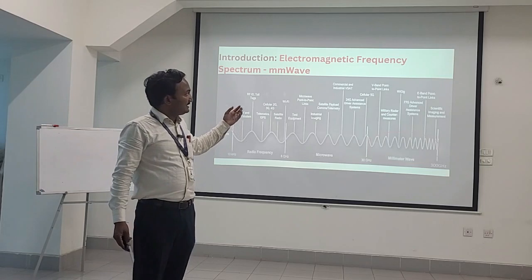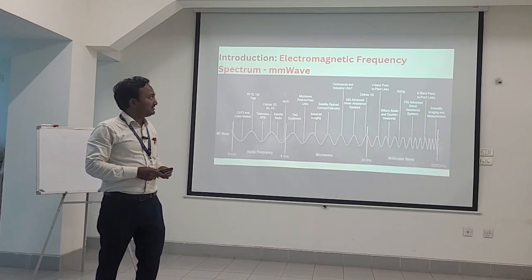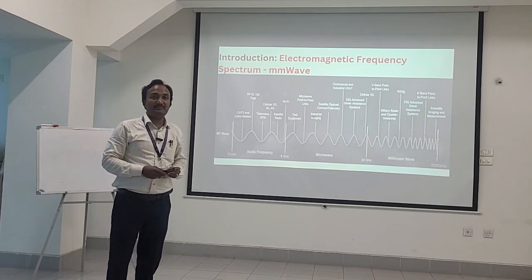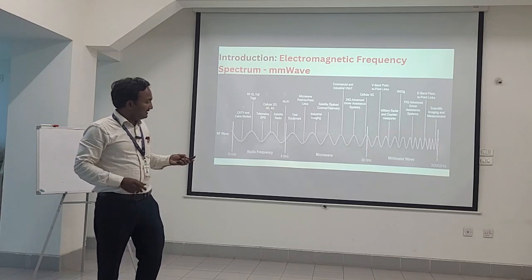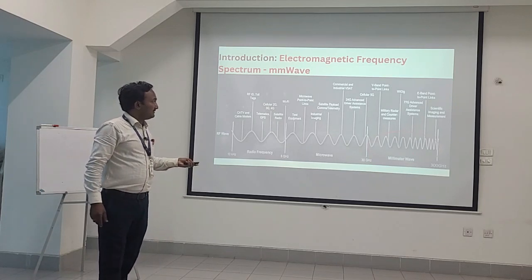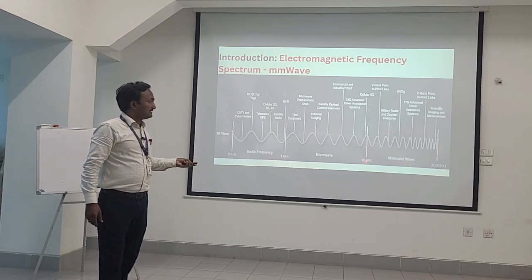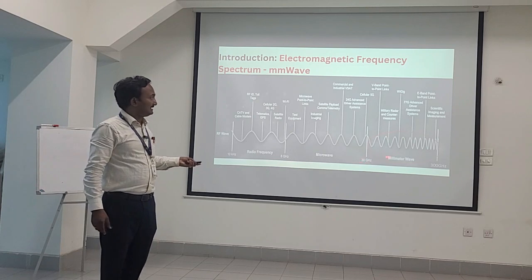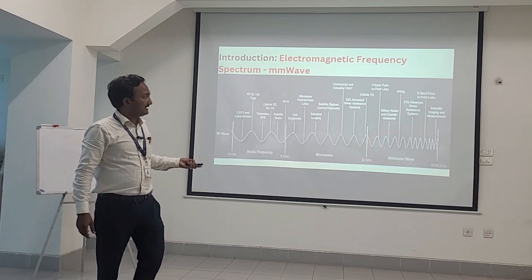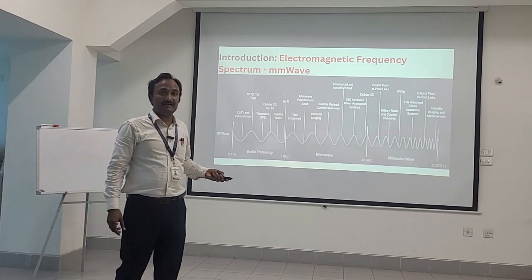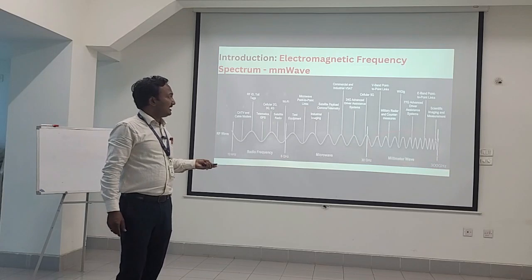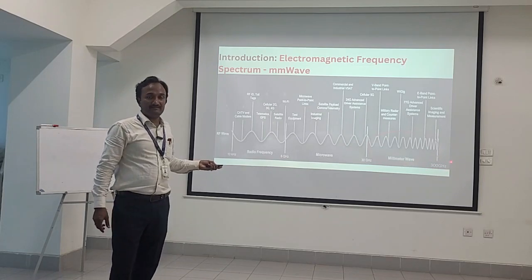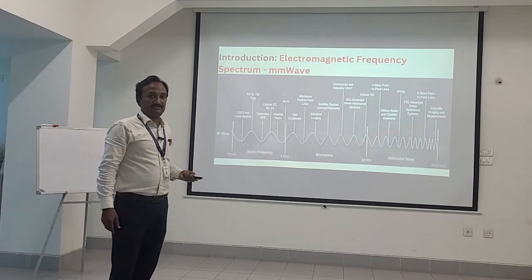It is also used for scientific imaging and measurement applications. As you can see, the millimeter wave starts from 30 gigahertz and ends at 300 gigahertz. It has a larger bandwidth, which is very useful for these applications.